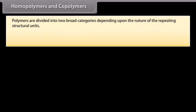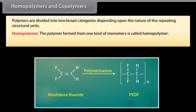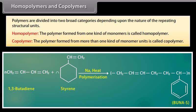Polymers are divided into two broad categories depending upon the nature of the repeating structural units. The polymer formed from one kind of monomers is called homopolymer. For example, PVDF is formed by vinylidene fluoride. The polymer formed from more than one kind of monomer units is called copolymer. For example, Buna-S rubber is formed by 1,3-butadiene and styrene.